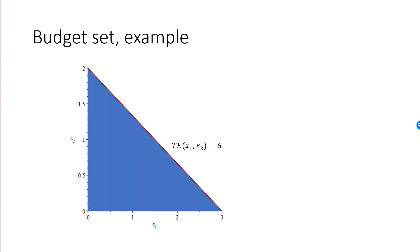Here is an example. The red line is the budget line, where P1 is 2 and P2 is 3, and we have 6 units of income. The budget set is then this blue area, and it includes the budget line.